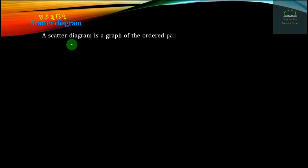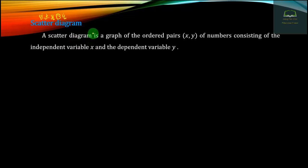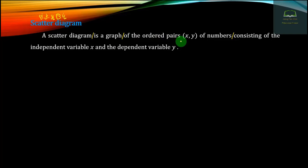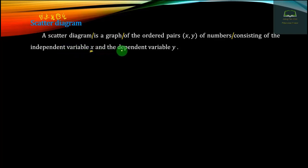This is a diagram of the graph — a graph of numbers. Here we have the graph, and in this case we are going to consider the variable h and the variable l. The variable h is related to the variable l.